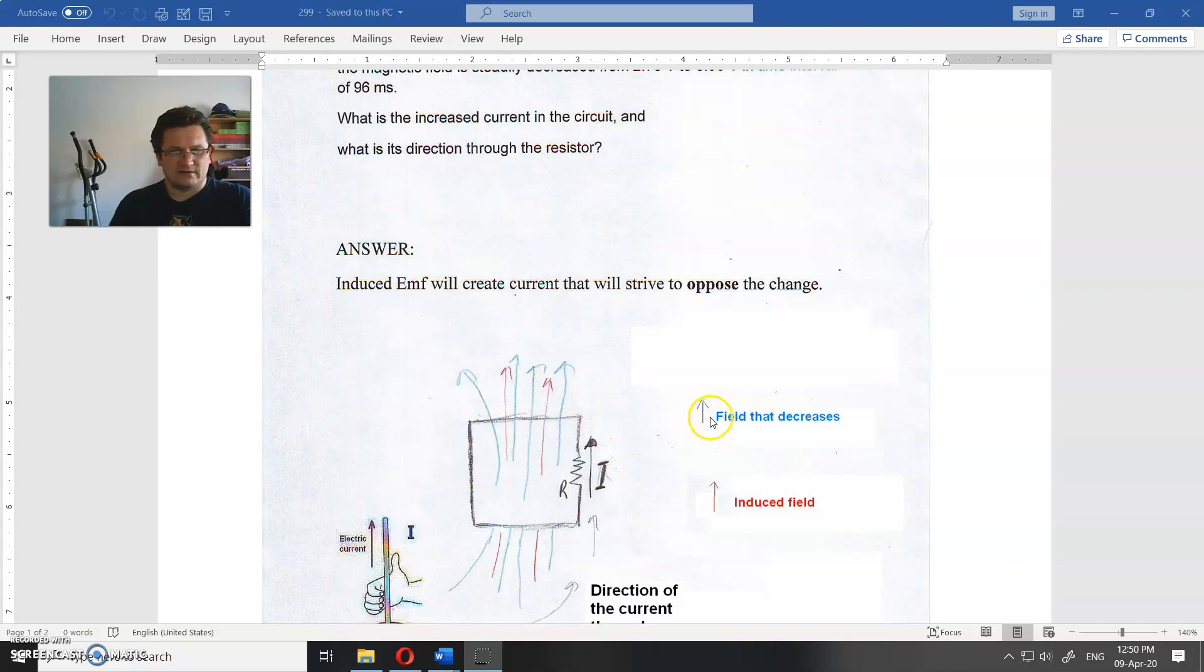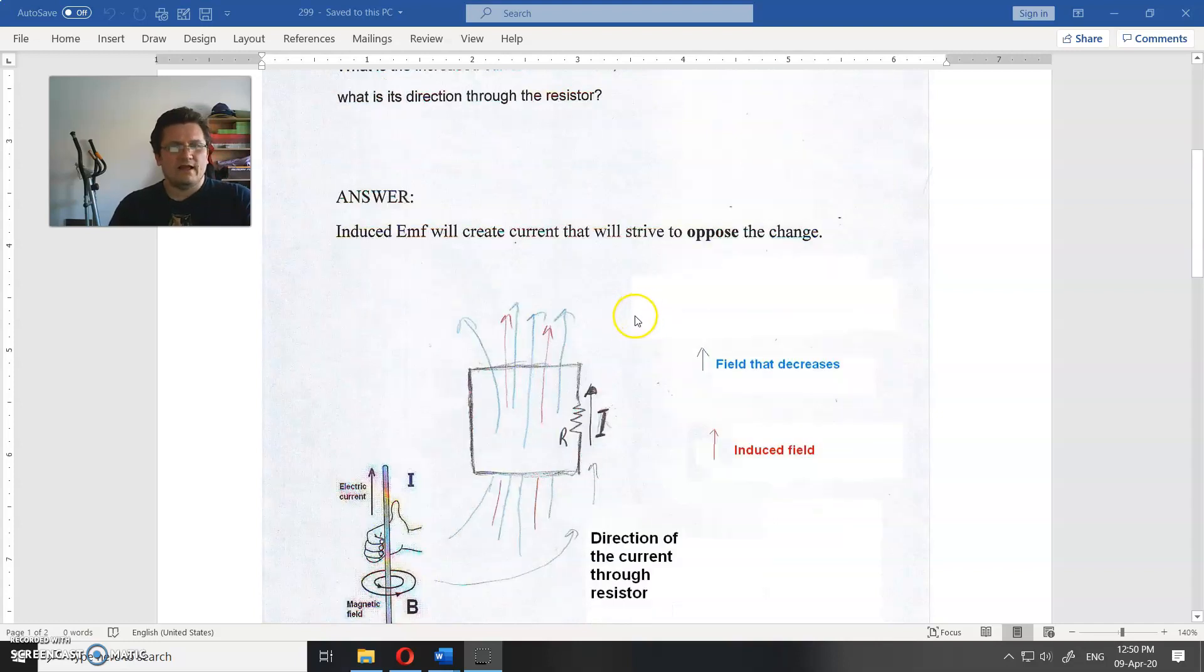So, that is field that is decreasing, and that is the same direction, induced field in the same direction as the decreasing current. If the current were increasing, then that would be another way, doesn't matter. So, direction of the current is as in picture.